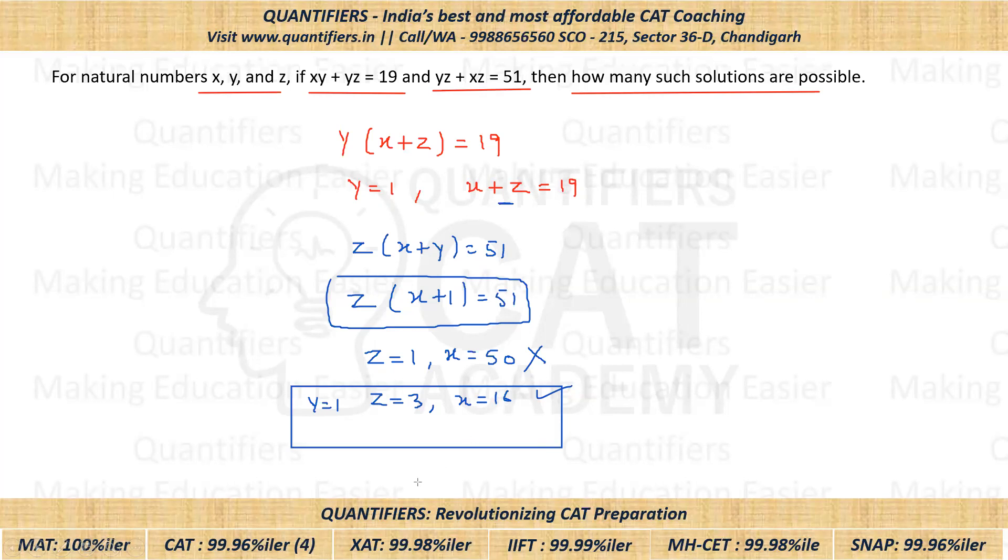Another factor of 51 is 17. Now if I put z as 17, in that case can I say x plus 1 will be 3? And if x plus 1 is 3, that means x is equal to 2.